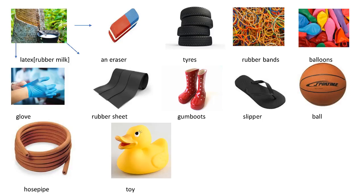Rubber comes from trees. Rubber milk is called latex. We make erasers, tires, rubber bands, balloons, gloves, rubber sheets, gumboots, slippers, balls, horse pipes and toys from rubber.